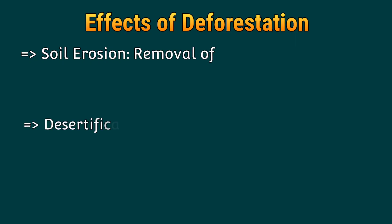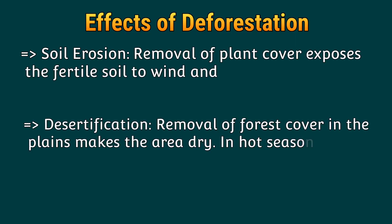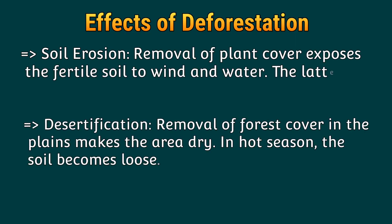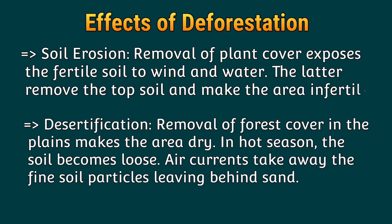Soil erosion: removal of plant cover exposes the fertile soil to wind and water, which remove the topsoil and make the area infertile. Deforestation: removal of forest cover in the plains makes the area dry; in hot seasons the soil becomes loose.